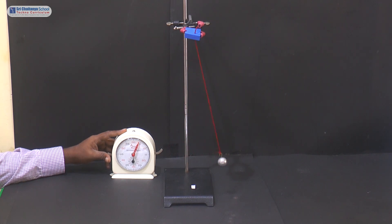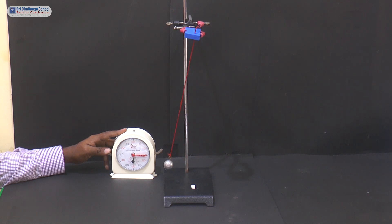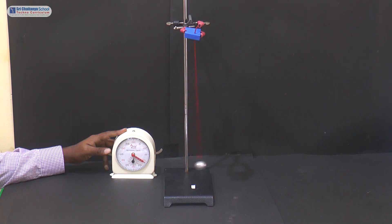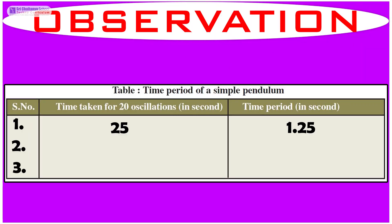Counting oscillations for the first trial: 1, 2, 3, 4, 5, 6, 7, 8, 9, 10, 11, 12, 13, 14, 15, 16, 17, 18, 19, 20. So what did you observe, my dear children?